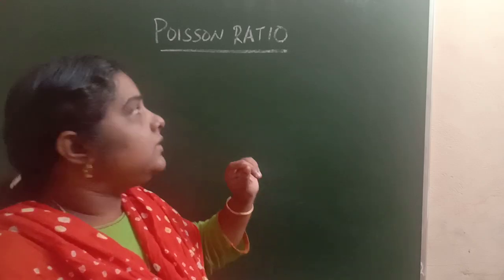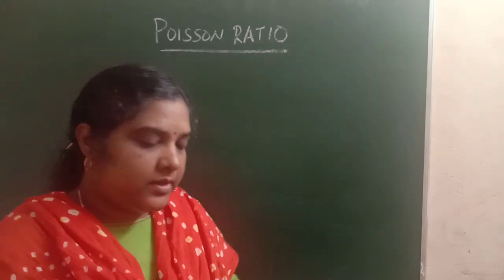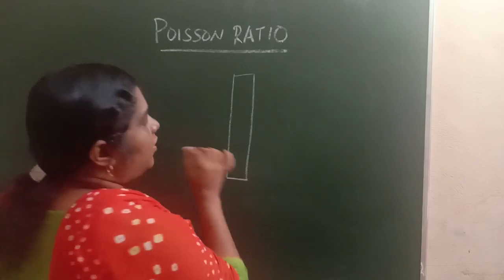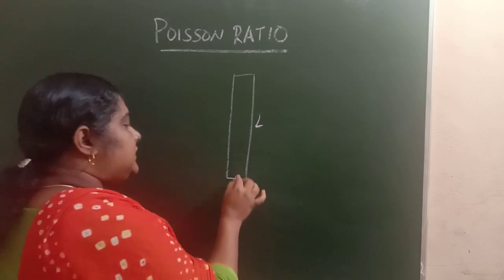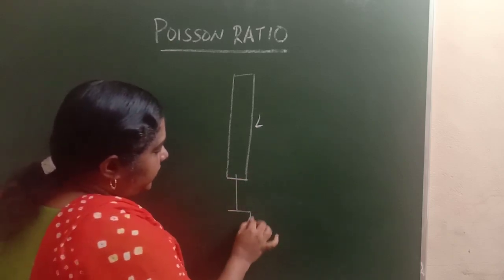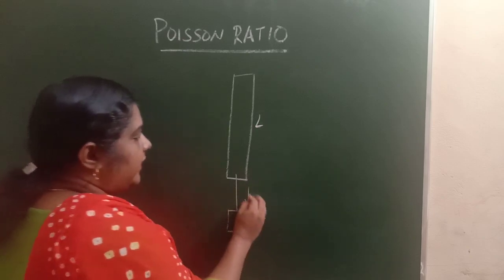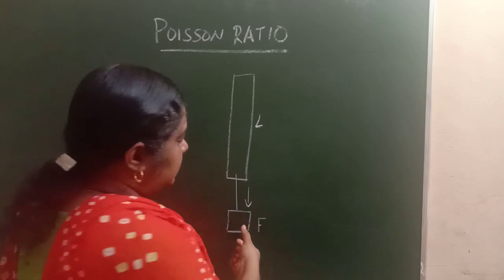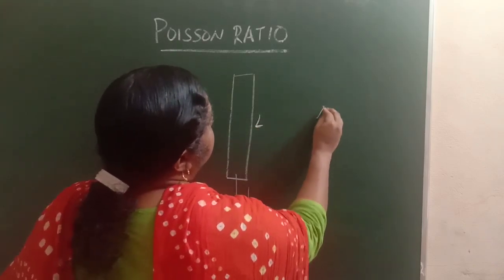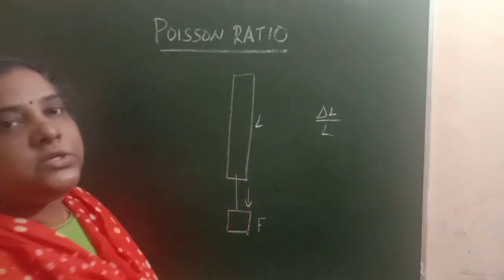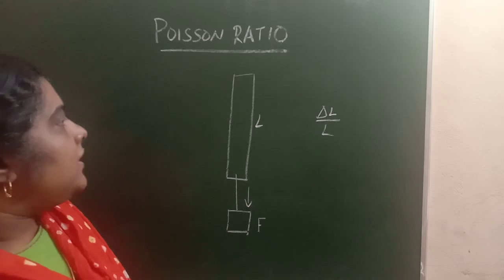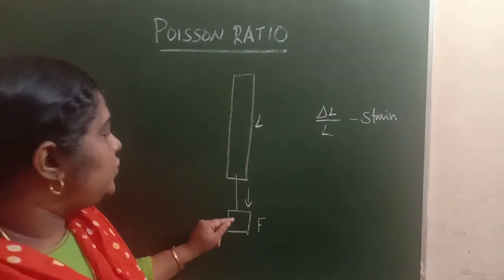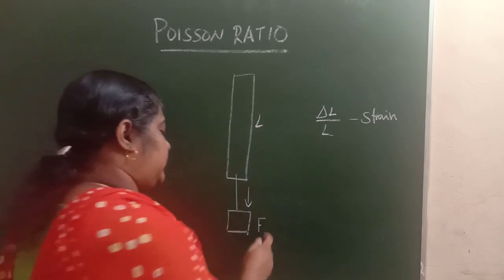Today we will discuss the Poisson's ratio of materials. Consider a body of material subjected to some elongation force or deforming force F. Due to this deforming force, there will be strain. This strain is delta L by L, where delta L is the change in the original length. This is called longitudinal strain — the strain produced in the direction of the applied force.